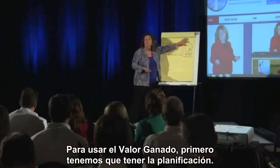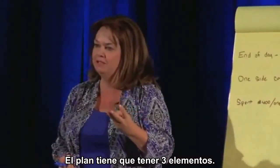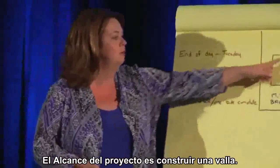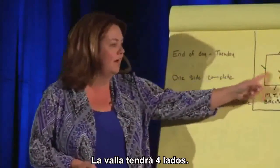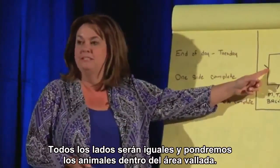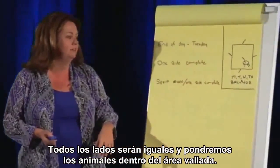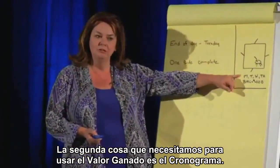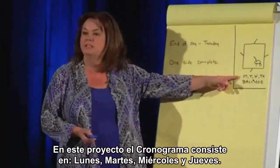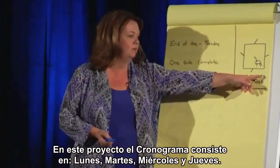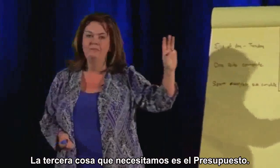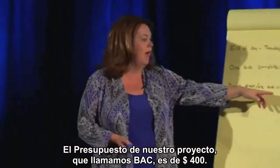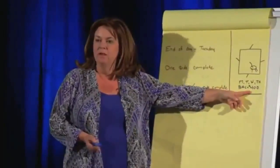To do earned value, first you need to have a plan. The plan needs three elements. First, the project scope — we're building a fence with four sides, each side the same, with animals inside. Second, a schedule: Monday, Tuesday, Wednesday, Thursday. Third, a budget.